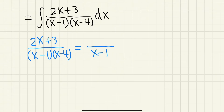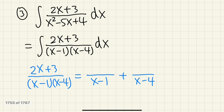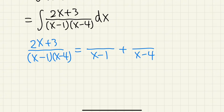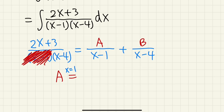We'll use partial fractions with the cover-up method. We write (2x + 3) over (x − 1)(x − 4) as A/(x − 1) plus B/(x − 4). The degree on top is 1 and the degree on the bottom is 2, so each numerator is just a constant. To find A, look at denominator x − 1, set x = 1.